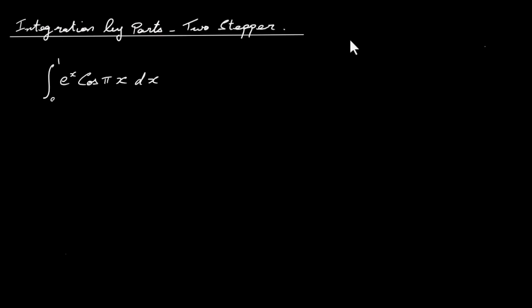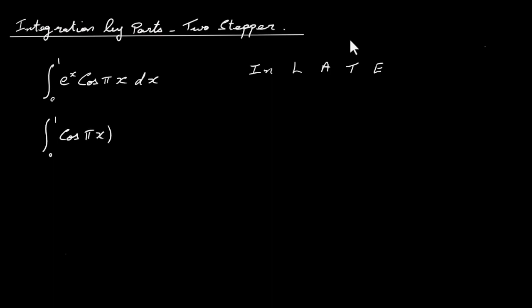In order to do integration by parts we're going to use what's called the ILATE rule. I stands for inverse functions like sine inverse, cos inverse. L stands for logs. A stands for algebra — anything involving x, x squared, x cubed. T stands for trig functions and E stands for exponential functions. In our function we have cos pi x (trig) and e to the power of x (exponential), so we put the trig function first, giving us the integral of cos pi x times e to the power of x dx.